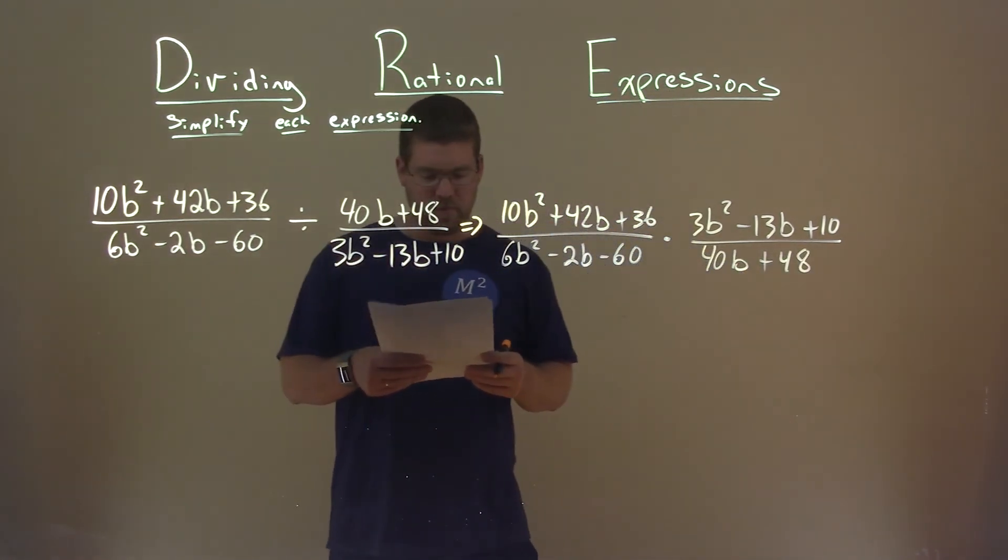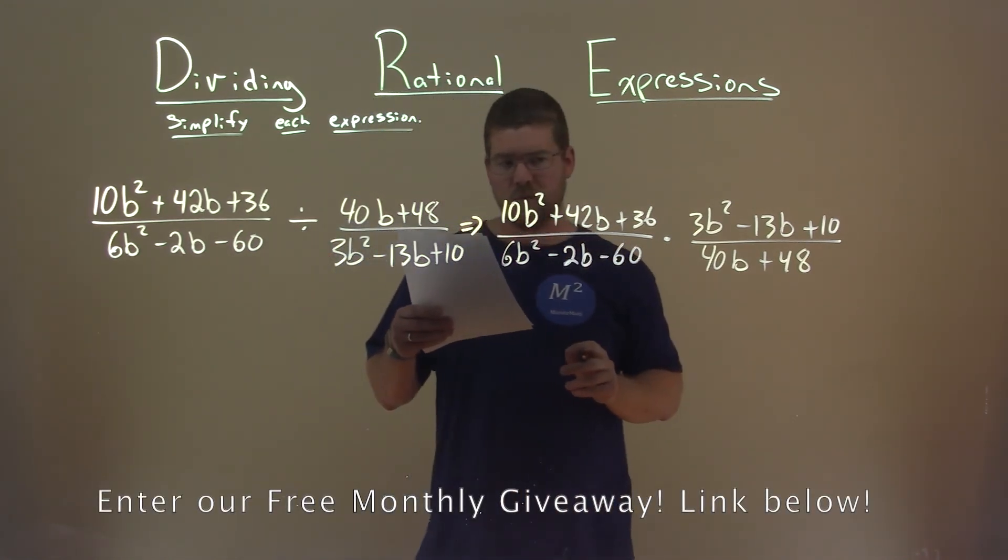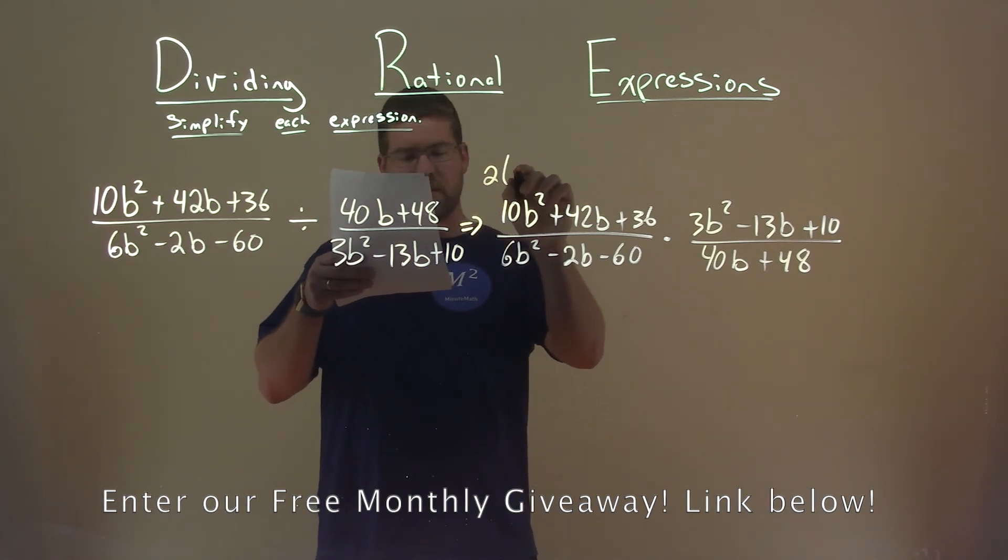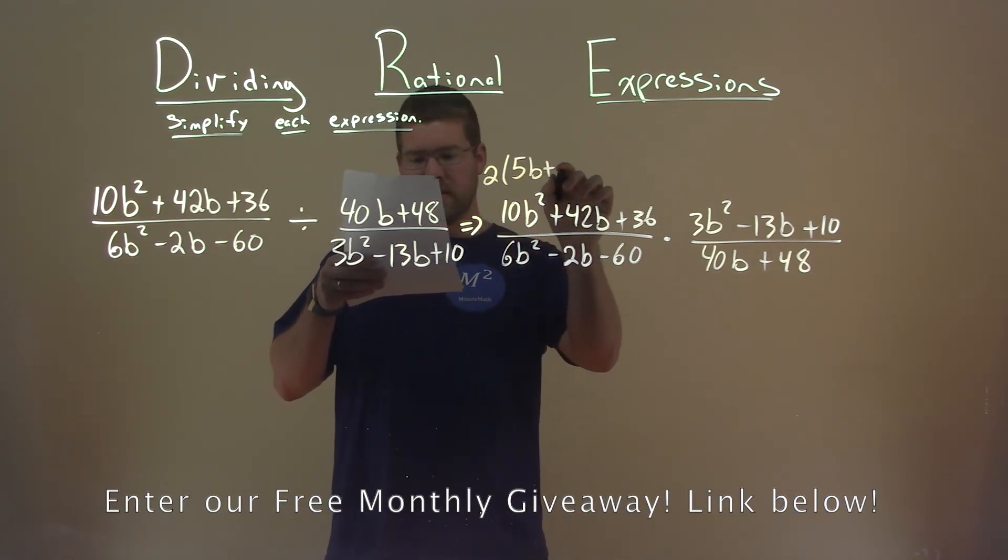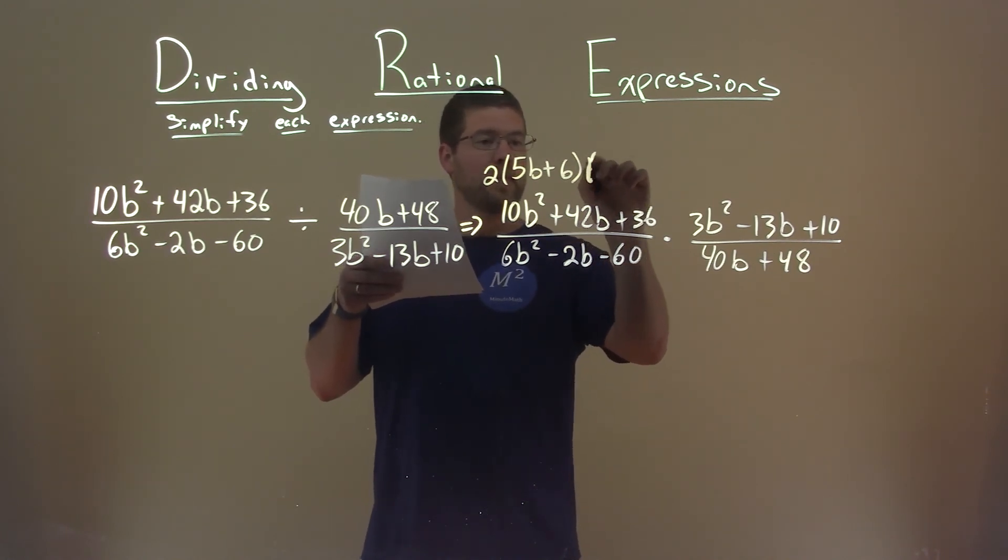Now I'm going to factor some stuff out. This numerator right here, 10b squared plus 42b plus 36, factors out to be 2 times 5b plus 6, times b plus 3.